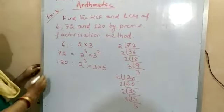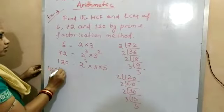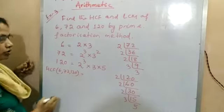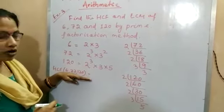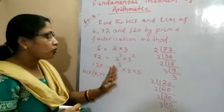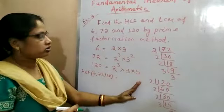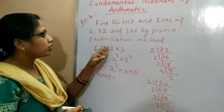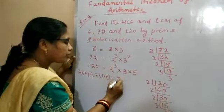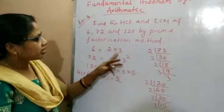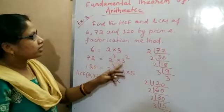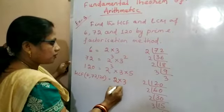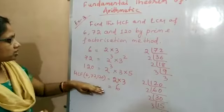Now find HCF of 6, 72 and 120. HCF equals the product of smallest power of common prime factors present in the numbers. The common factors are 2 and 3. The smallest power of 2 is 2¹ (from 6). The smallest power of 3 is 3¹ (from 6). So HCF = 2 × 3 = 6.